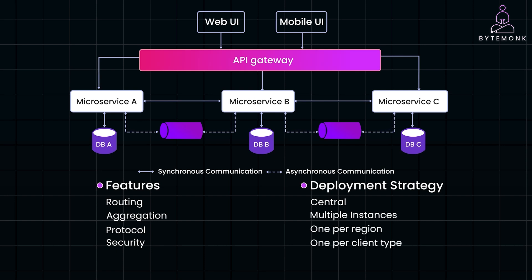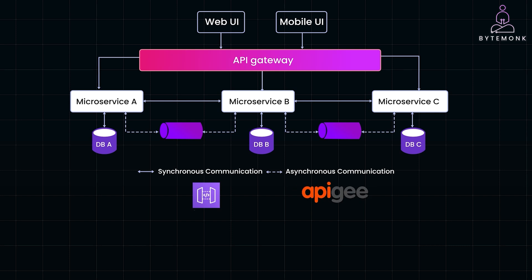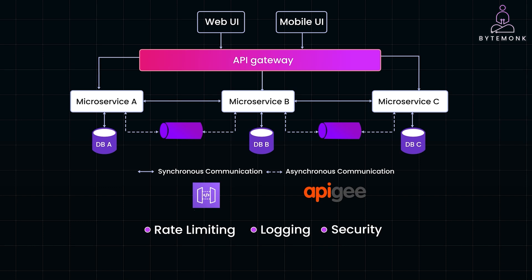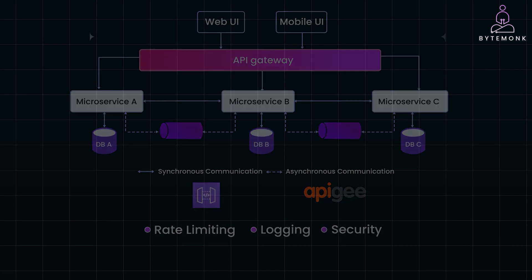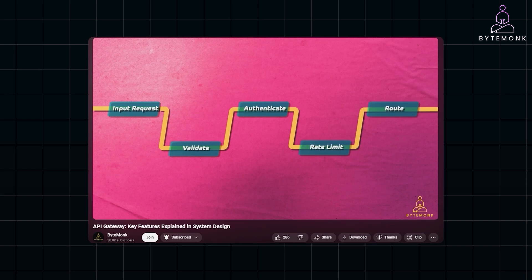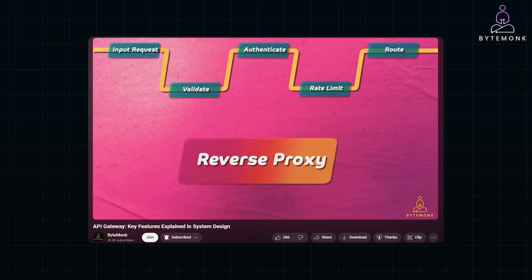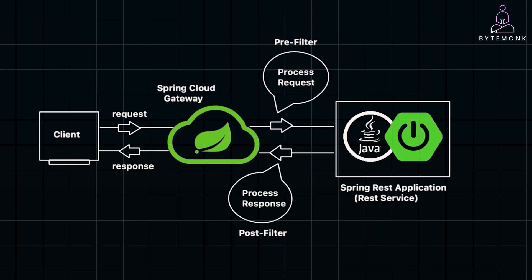When it comes to implementation, you have several options. Products like Amazon API Gateway and Apigee provide robust, enterprise-grade solutions with built-in features like rate limiting, logging, and security. They are easy to set up and integrate with existing microservices, but can be costly and may lock you into a specific ecosystem. If you need more control, frameworks like Spring Cloud Gateway and Express Gateway allow you to build a gateway tailored to your specific needs. These frameworks offer flexibility but require more development effort and maintenance.